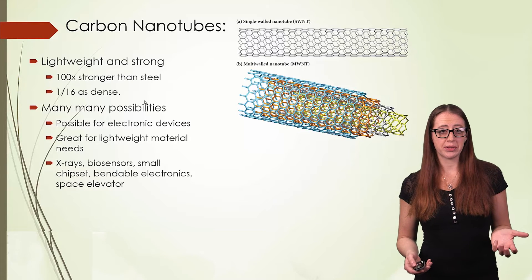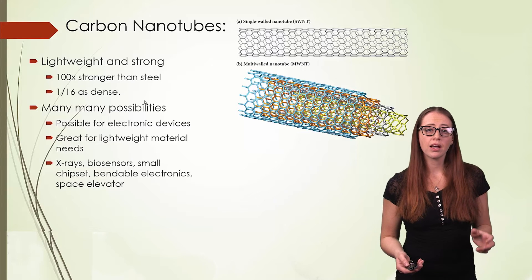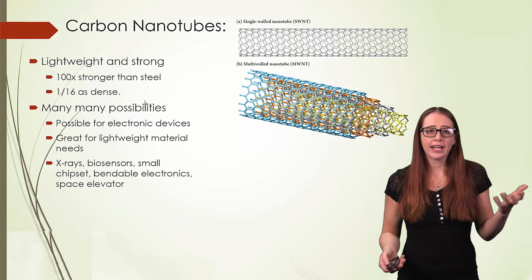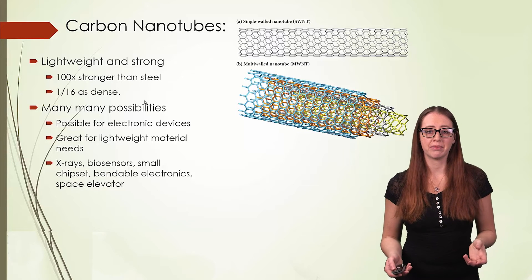Something else that we do with carbon allotropes are called carbon nanotubes. Carbon nanotubes are created from hexagons that are in a long tube. It kind of looks like chicken wire, if you want to think about it like that.